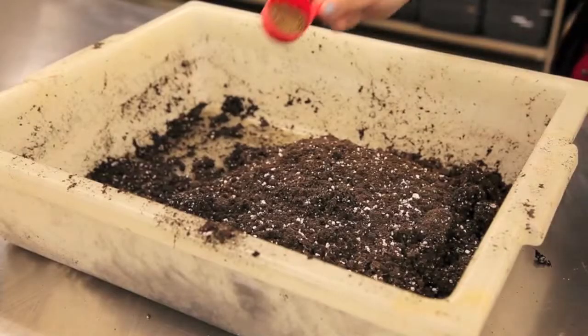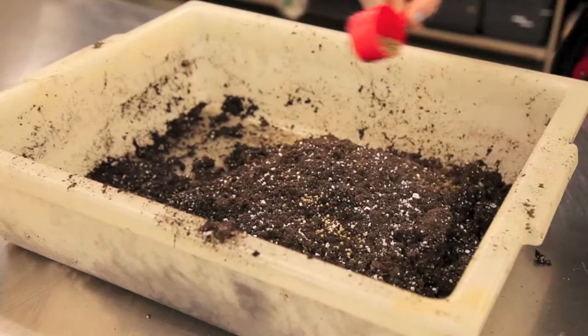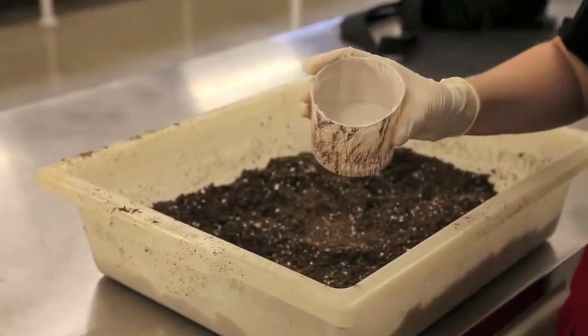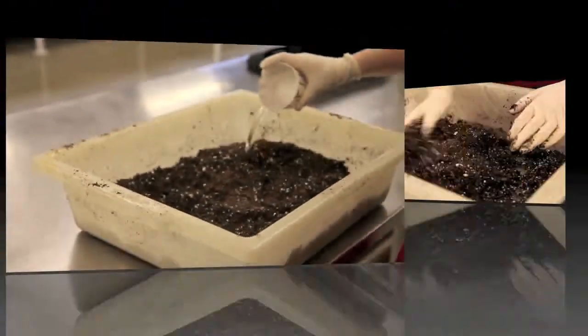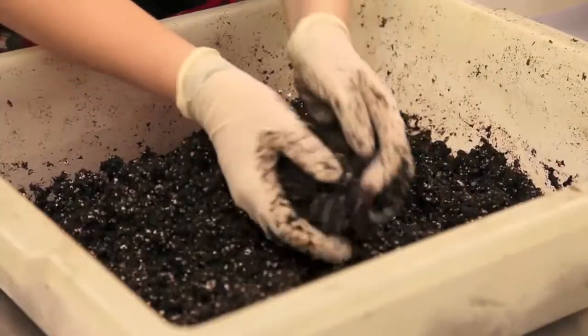Depending on the soil you're using, you may also choose to add a slow-release fertilizer, such as Osmocote, to your container. Next, add water to your soil and use your hands to mix it in, ensuring that the water is evenly spread throughout the entire soil container.